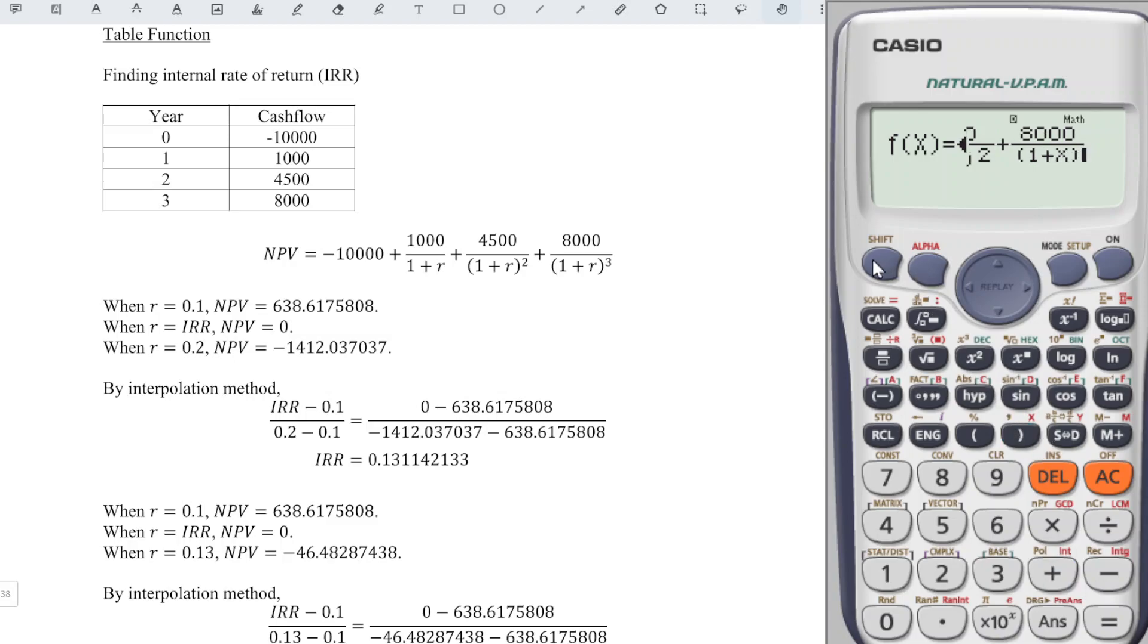Press equal. Some calculators might ask for function G, some might not. If we have only one function, we can press shift menu for setup and press down, look for the table function, and choose only the function F1.